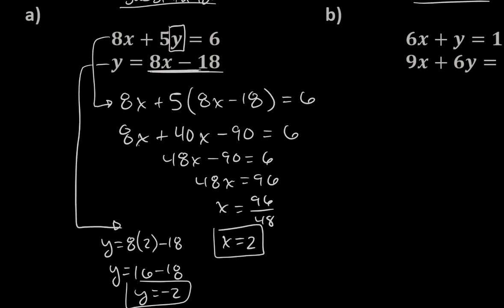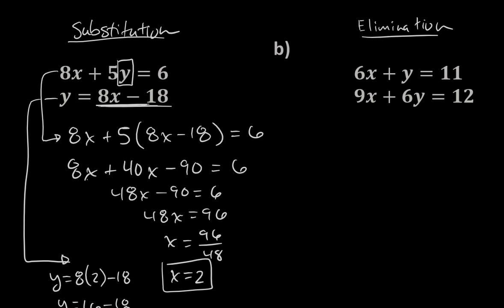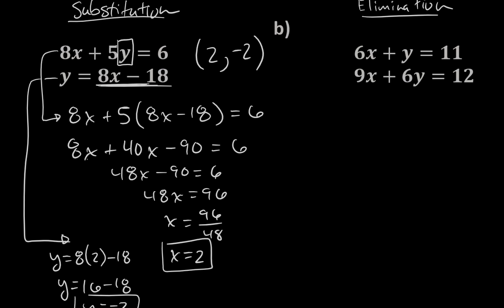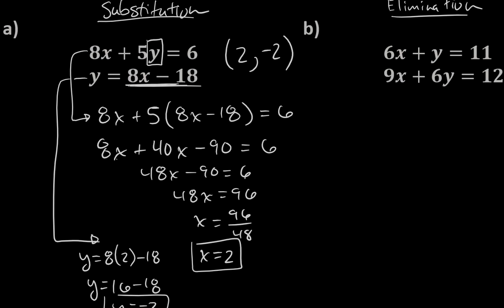So y should equal 2 times 8 is 16 minus 18, which means y should be negative 2. So I have the two components I need, and my solution would be (2, negative 2). That's right, x is 2 and y is negative 2. So that's A. I used that in the substitution section, and I think you can see what the substitution looks like.